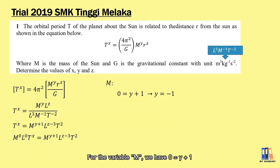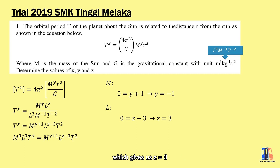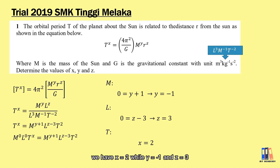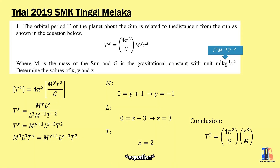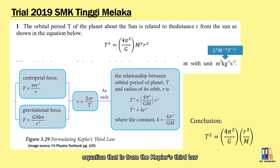For variable M, we have 0 equals y plus 1, which gives y equals negative 1. For variable L, we have 0 equals z minus 3, which gives z equals 3. For variable T, we have x equals 2. Finally, x equals 2, y equals negative 1, and z equals 3, which gives us the equation with 4 pi squared r cubed over gm. You might recognize this equation as Kepler's third law, which you learned in Form 4 physics.